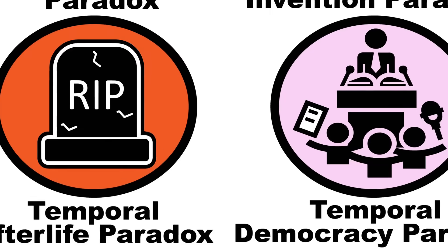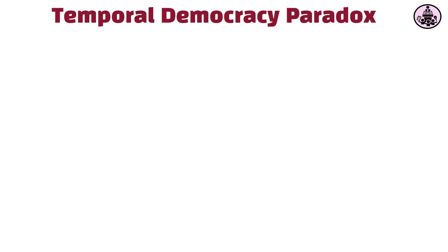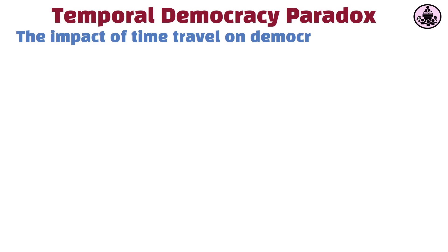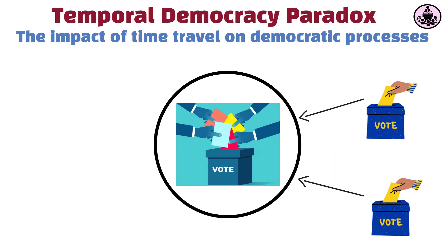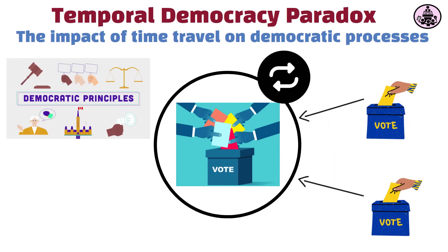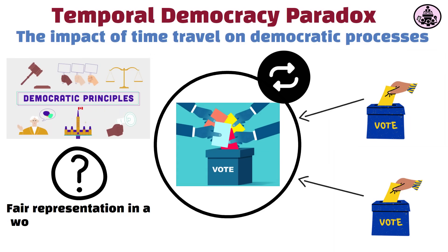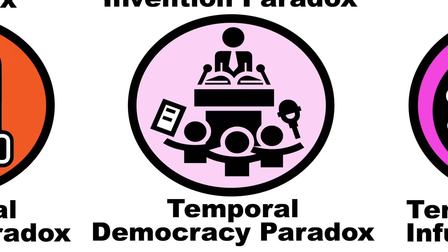The temporal democracy paradox considers the impact of time travel on democratic processes. If time travelers could vote multiple times in the same election by visiting the same day repeatedly, it could undermine the principles of democracy and raise questions about fair representation in a world with time travel.